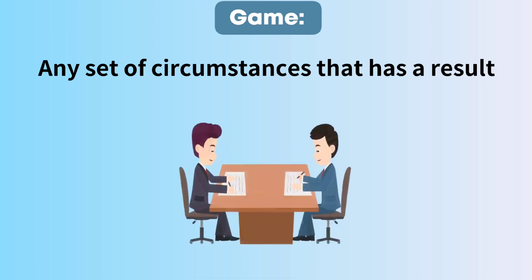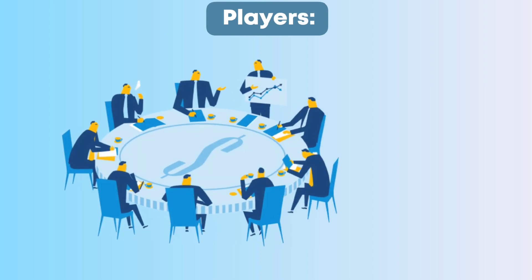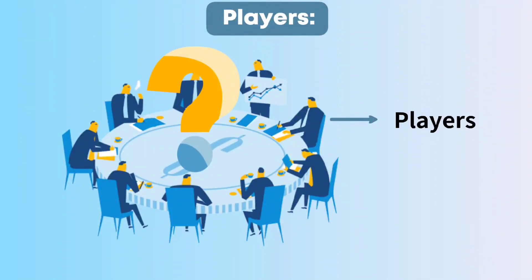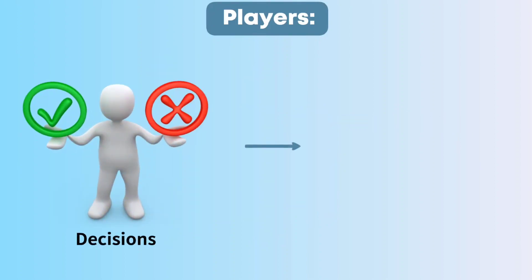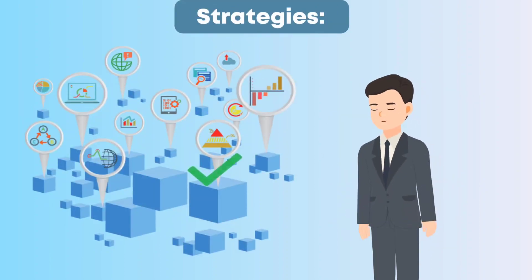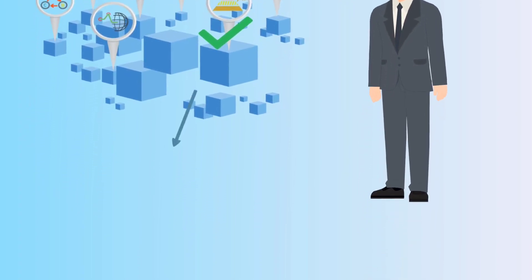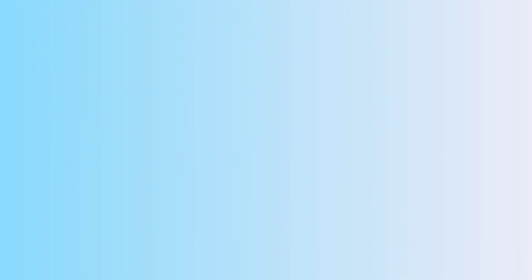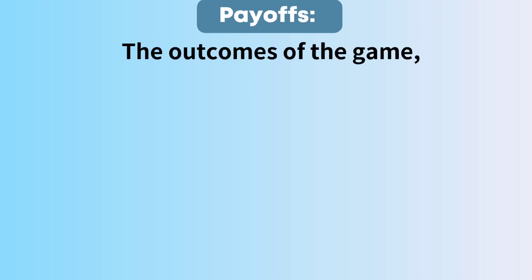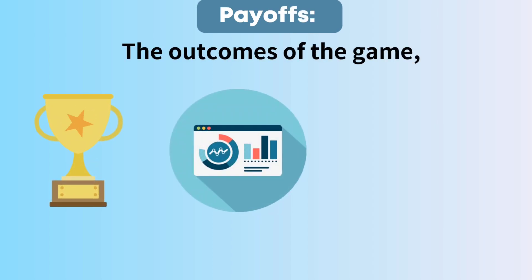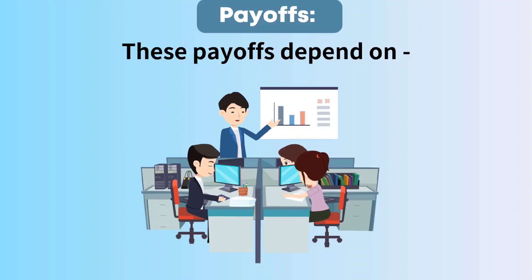Let's discuss key concepts in game theory. Game: any set of circumstances that has a result dependent on the actions of two or more decision-makers. Players: the participants in game theory, known as players, make decisions or choices, and their decisions impact the overall outcome of the game. Strategies: each player has a set of possible strategies to choose from, representing their possible actions or decisions. Payoffs: the outcomes of the game in terms of rewards or utilities for each player, which depend on the combination of strategies chosen by all players.